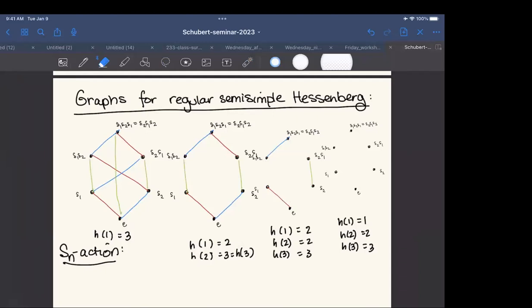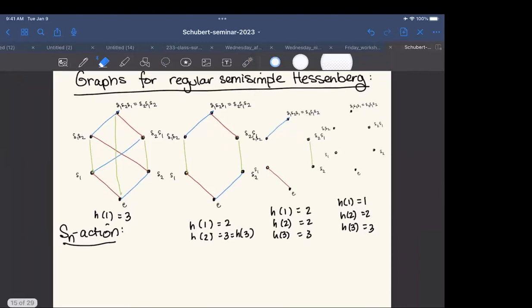Now if I take this function h of 1 equals 2, h of 2 equals 3, h of 3 equals 3, I'm just erasing the middle edges. And then finally on the left, I have all of the edges that I started with. So if you think of it as moving from the full flag variety to the right, every time you take a step to the right, you erase precisely one green, one red, one blue edge. It's actually determined exactly by the conditions of the Hessenberg function. And it's determined by which reflections you are right multiplying by. So right multiplication determines which edges you remove to get your regular semi-simple Hessenberg varieties.